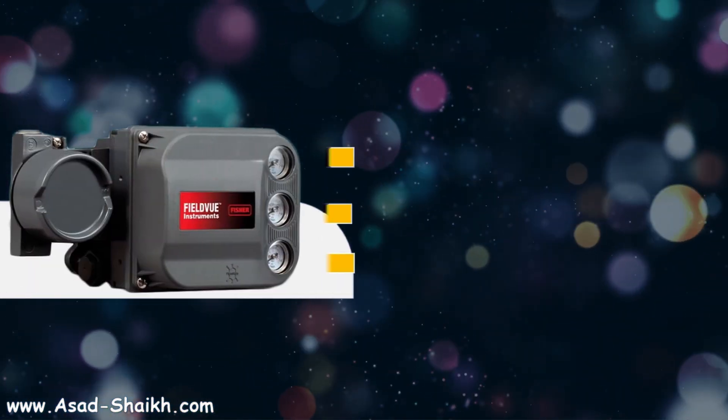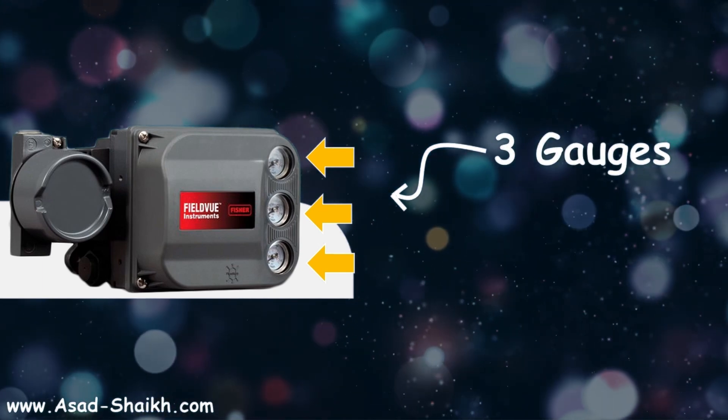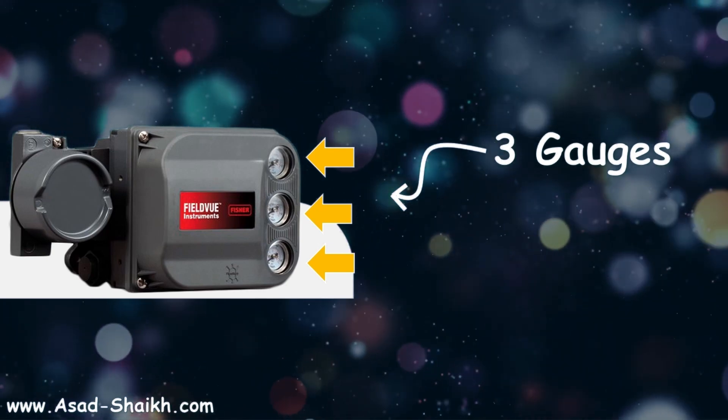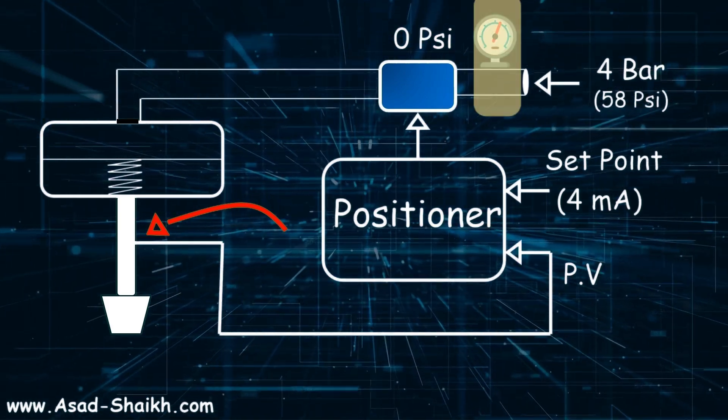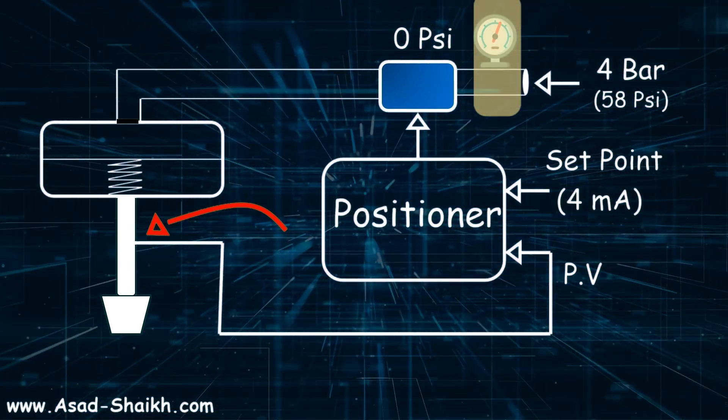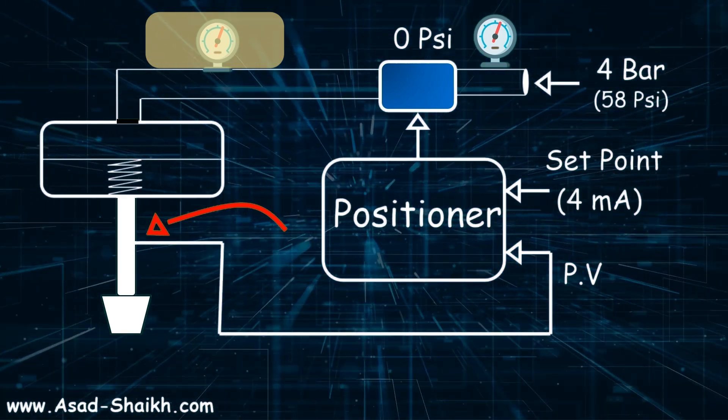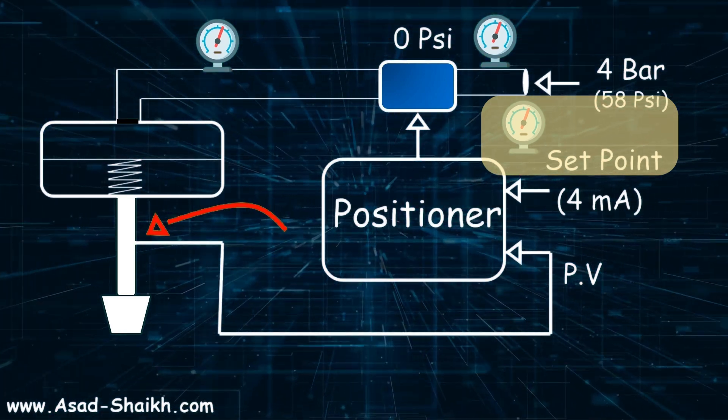But still we have not answered the initial question: why are there three pressure gauges usually available? The answer is because it will help you to troubleshoot what is the issue with control valve. One gauge is put near the air supply so you get to know whether the air supply is available. The second gauge is generally put at the output of the positioner, and the other gauge is put at the set point related to the bench range.